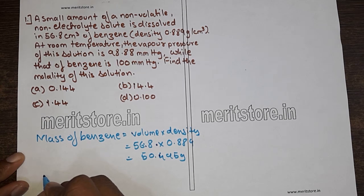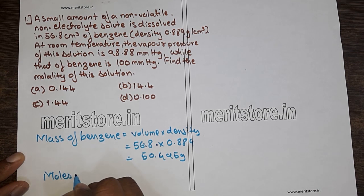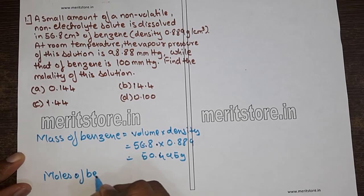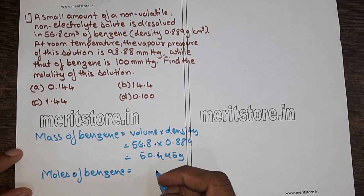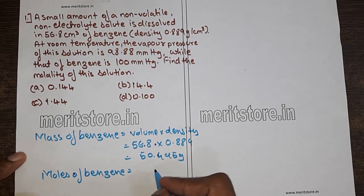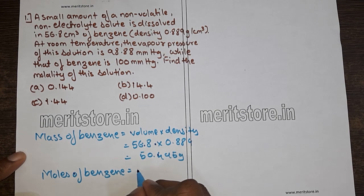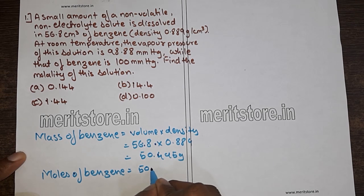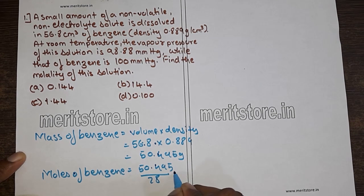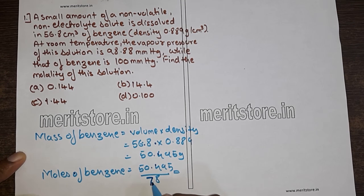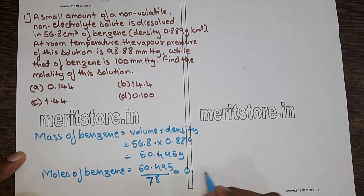Now we find the moles of benzene, which is equal to mass of benzene upon molecular weight of benzene. Mass of benzene is 50.495 g, and molecular weight of benzene is 78. Solving this, we get 0.6474 moles.